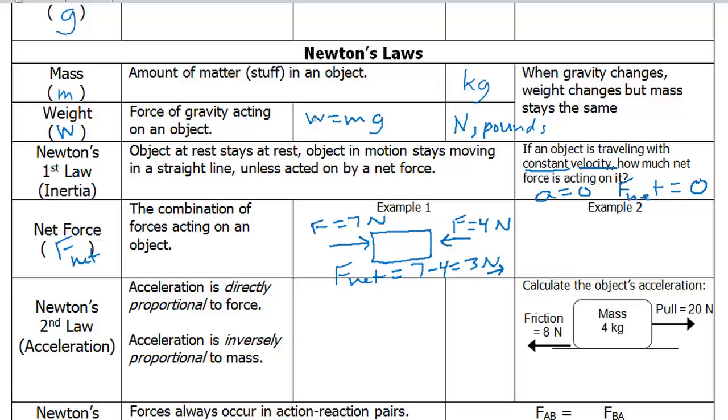Which equals 3 newtons to the right. So the 4 newtons partially cancels the 7 newtons, but still leaves 3 newtons uncancelled acting to the right.